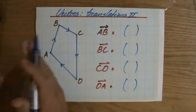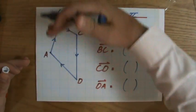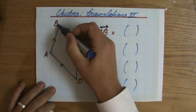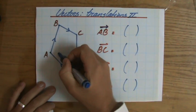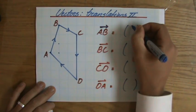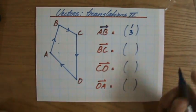From A to B, the first number is the horizontal translation. The second number is the vertical translation. So to go from A to B, I go one to the right, and then one, two, three up, so it's going to be one, three. See that? Good.